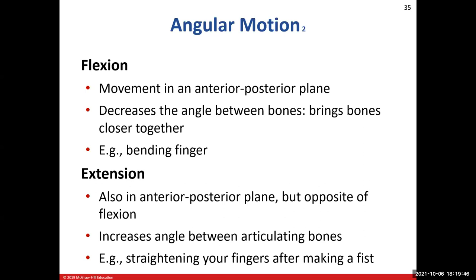Extension is the opposite of flexion — you increase the angle between two bones, also in the anterior-posterior plane. For example, opening your hand after making a fist, or straightening your elbow after taking a drink, moves the bones away from each other — that is extension.